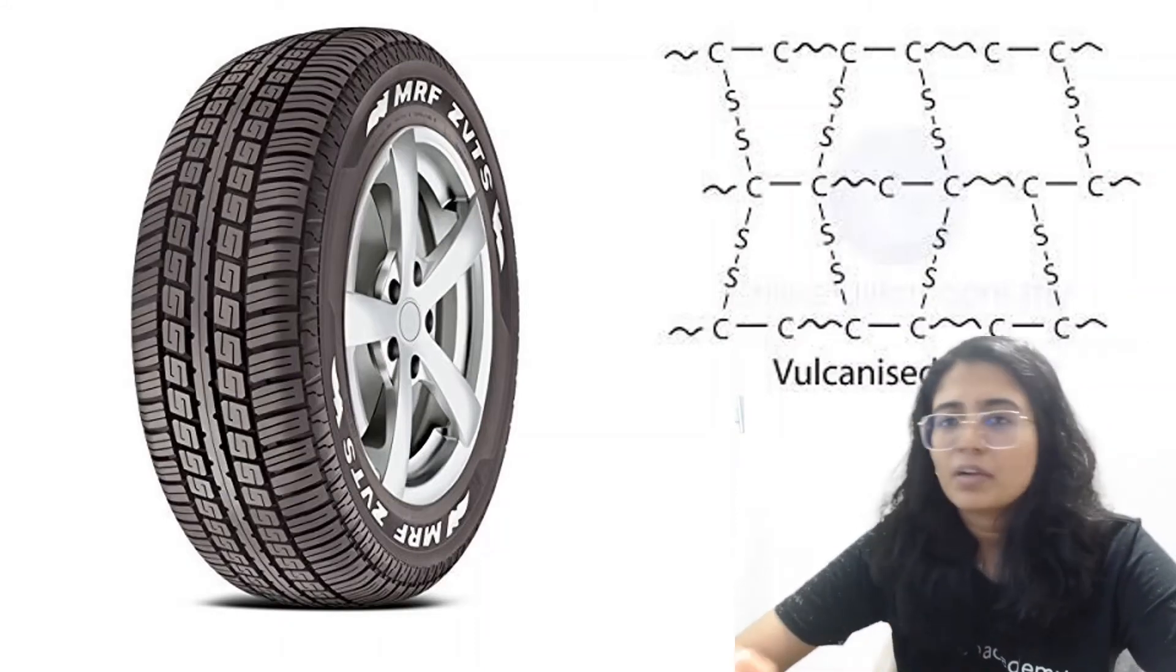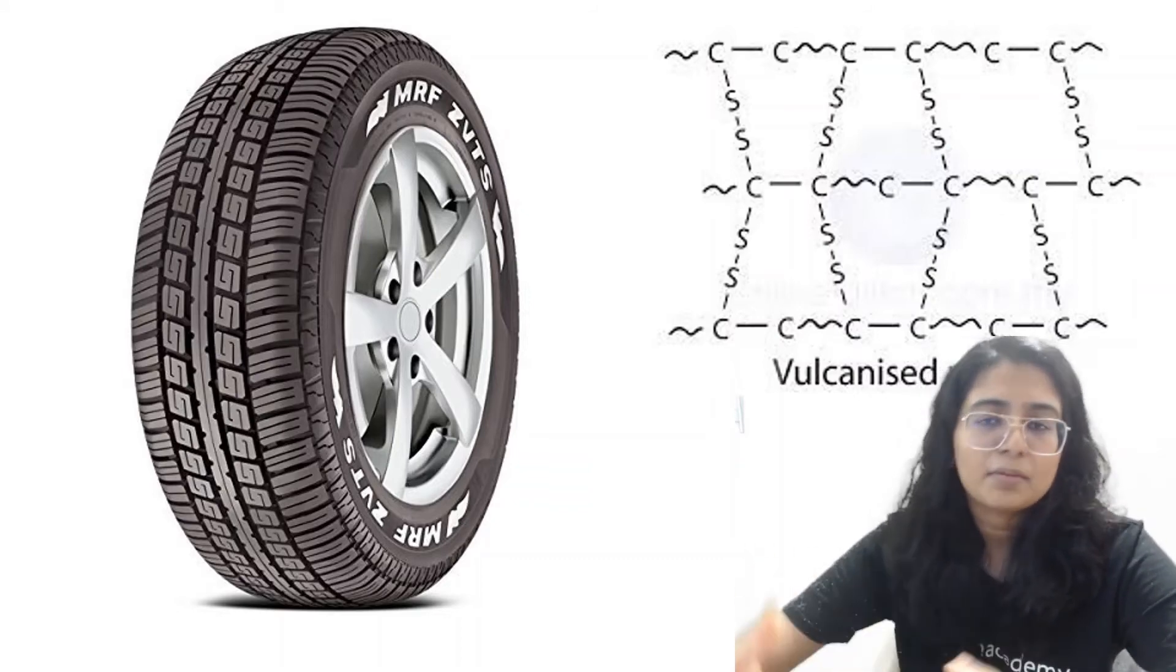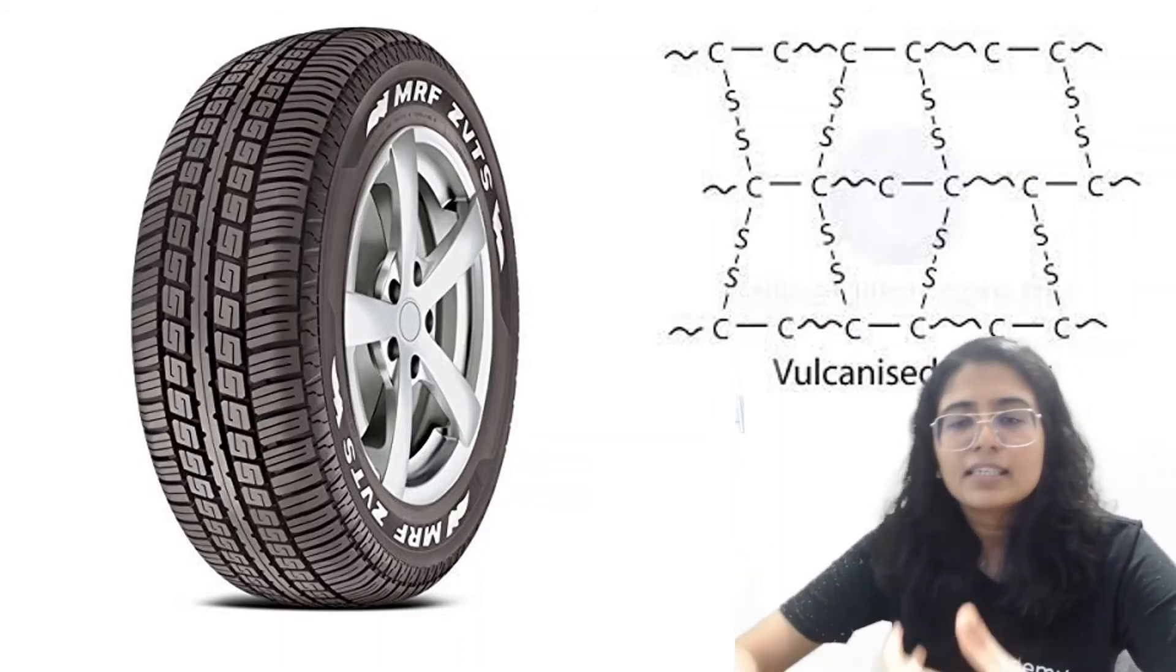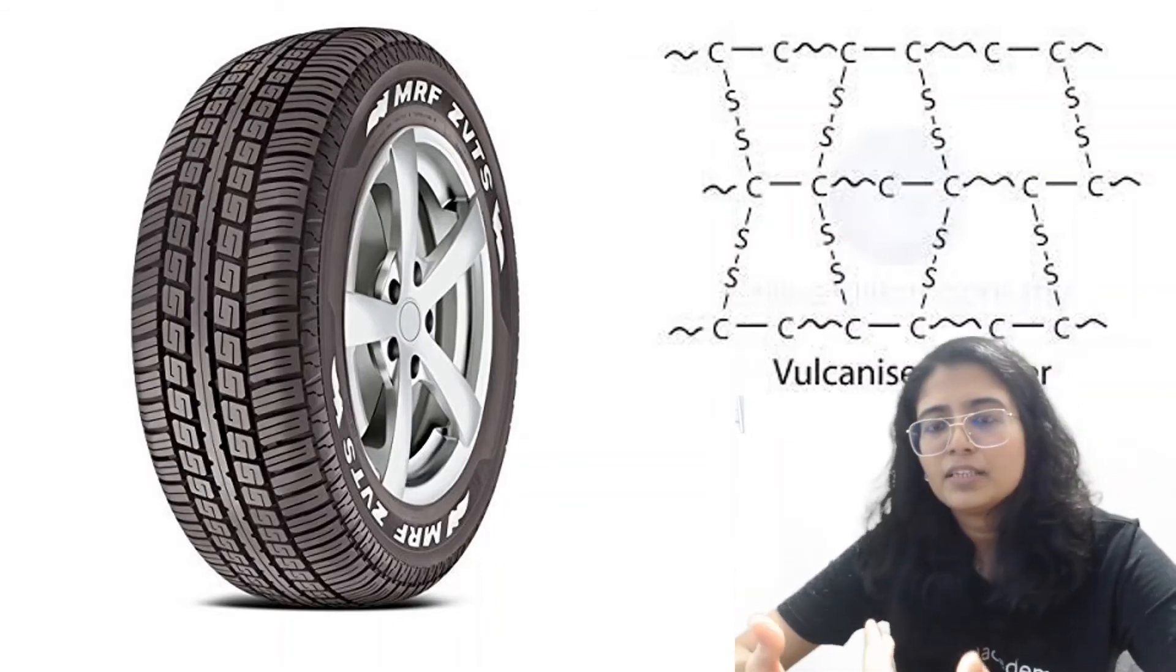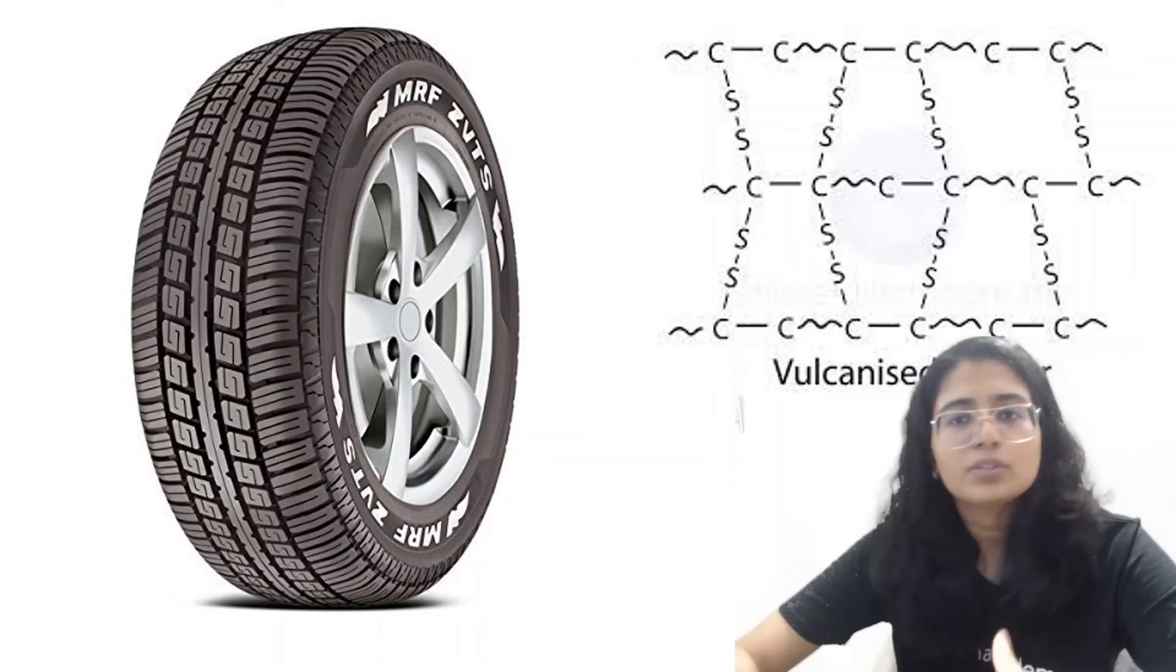So a tire which we know is made of rubber and it is not the normal rubber that you get from the tree. It is a rubber which is treated to vulcanize it, to make the properties more superior, to make it much stronger and that is why we know a tire of course is very strong.